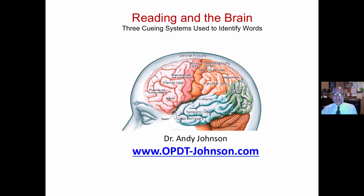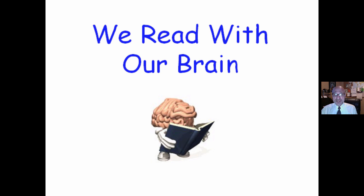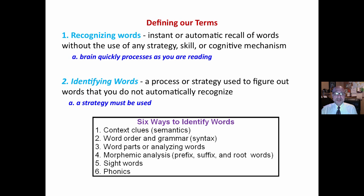Andy Johnson here. We are looking at reading in the brain, specifically three cueing systems used to identify words. There is often confusion as to what is meant by cueing systems and reading.